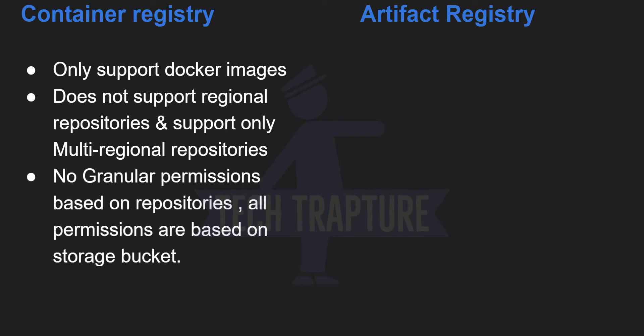In Container Registry, the images are stored in a storage bucket. So anyone having access to that storage bucket will have access to the images, and access cannot be controlled at a particular repository level. If a person has access to the bucket, they will have access to all hosts and repositories in your project.